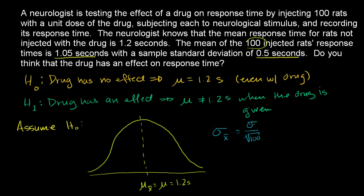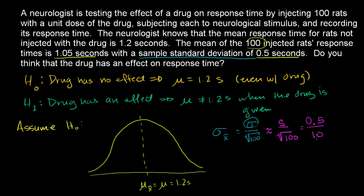We don't know the standard deviation of the entire population, so we'll estimate it with our sample standard deviation — a reasonable approach, especially with a sample size of 100. So this is approximately equal to our sample standard deviation divided by the square root of 100, which equals 0.5 seconds divided by 10, giving us 0.05. We'll put a little hat over it to show we approximated the population standard deviation with the sample standard deviation, so it equals 0.05.